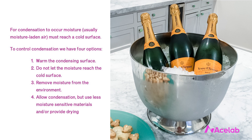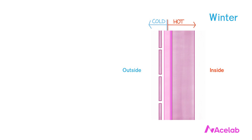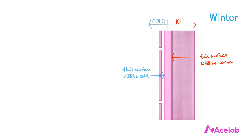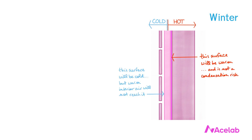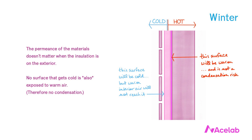In the champagne-on-ice example, we're happy to just let the condensation happen — maybe the label on the bottle will peel a bit, but nothing we really care about gets damaged. Now let's think about how the perfect wall will perform in winter. It will be cold outside and warm inside. Everything to the exterior of the insulation will be cold, just like the outside, and everything to the interior of the insulation will be warm, just like the inside. We don't get condensation because warm interior air never reaches the cold exterior surfaces.